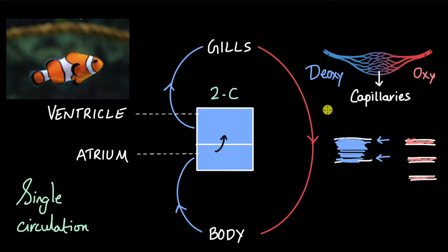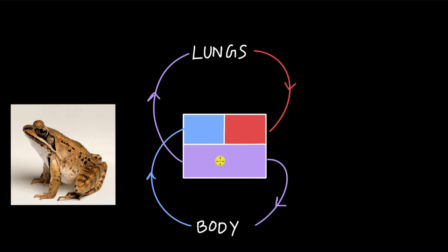We can ask ourselves: is this circulatory system good enough for a reptile or an amphibian? It turns out it doesn't work — the rate at which the blood flows is not enough to meet the requirements of the high metabolic activity of an amphibian or reptile. It's good enough for a fish because its swimming movements help move blood through the body, but not for an amphibian or reptile. So there needs to be an evolutionary adaptation: from single circulation, we go to double circulation, where blood must pass through the heart twice in one complete cycle.